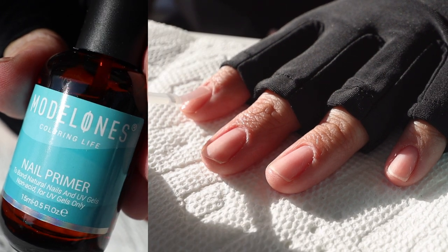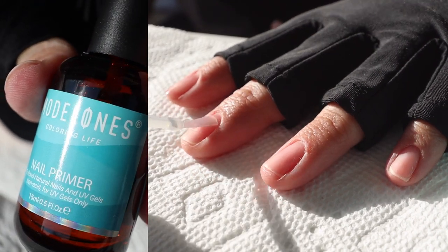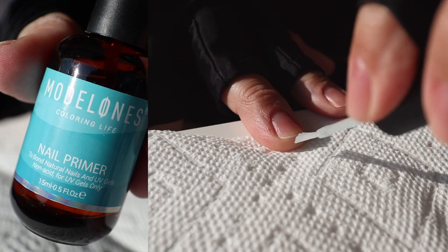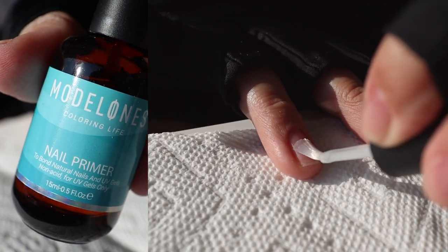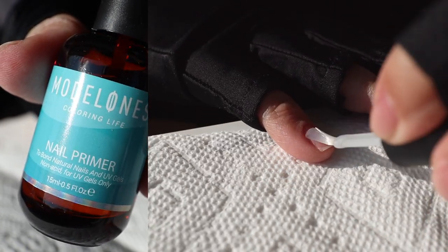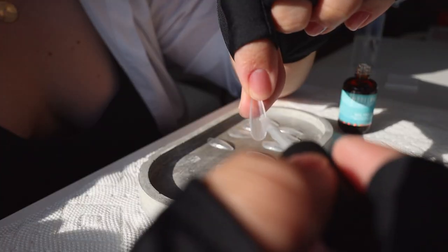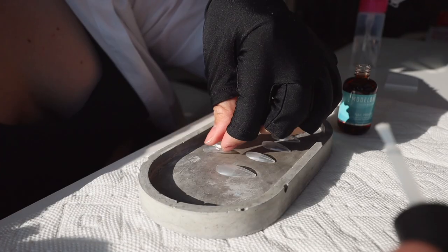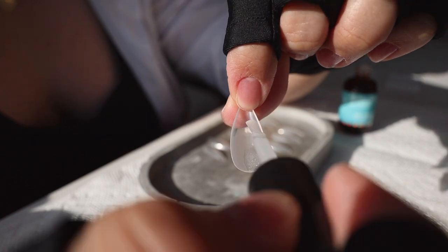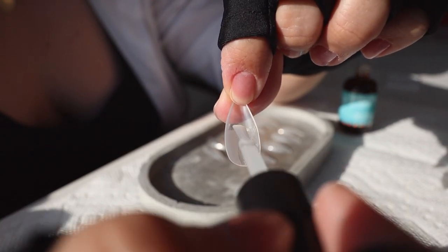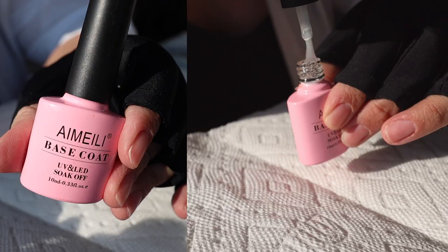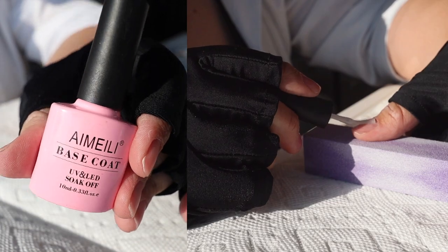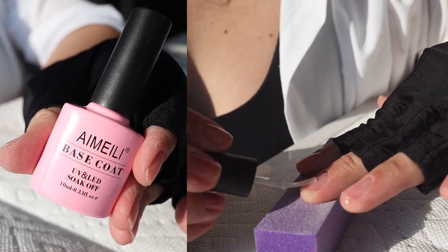Next, I applied nail primer that creates this sticky tacky layer on your nail that will help adhere the gel tips to your natural nails. I also went ahead and added a layer of this primer to the back of the gel tips as well. Next, I applied a base coat to my nails, making sure that I applied a very light layer.